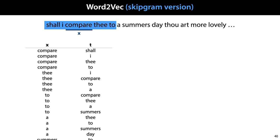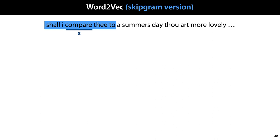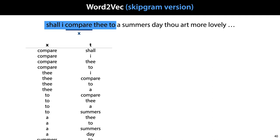So here we see, for instance, that at the start of the data, the words occurring in the context of the word 'compare' are 'shall', 'I', 'the', and 'to'. Our task now is to predict, for a given input word x, the distribution of words likely to appear in its context windows throughout the text.